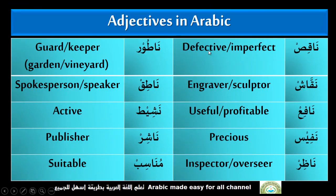Naqqisun — Defective, Imperfect. Naqqash — Engraver, Sculptor. Nafe — Useful, Profitable. Nafees — Precious. Najir — Inspector, Overseer. Naathur — Guard, Keeper, in regard to a garden or vineyard. Naatik — Spokesperson, Speaker. Naashir — Active. Naashir — Publisher. Munasib — Suitable.